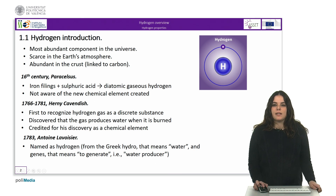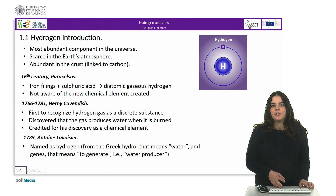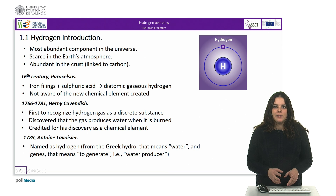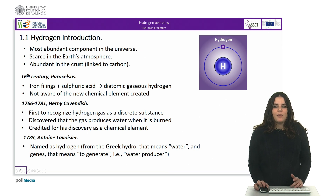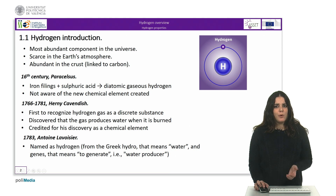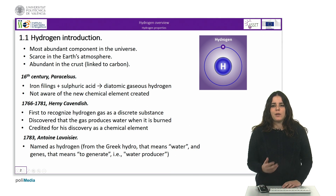Hydrogen was discovered in the 16th century when Paracelsus obtained the atomic gaseous hydrogen by adding iron fillings to sulfuric acid. However, he was not aware that the flammable gas generated was composed of a new chemical element.